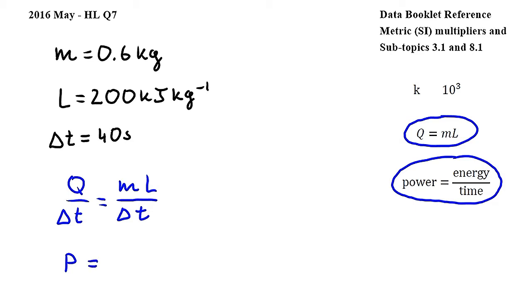Let's substitute our values. So we get 0.6 times 200 over 40. 0.6 times 200 is 120, and that's divided by 40. Simplifying by 10, I get 12 over 4, which is equal to 3. And our unit here is in kilojoules, because L was in kilojoules per kilogram.